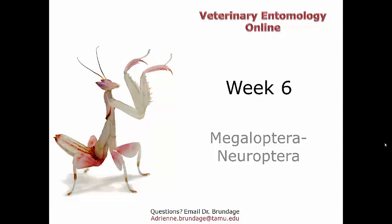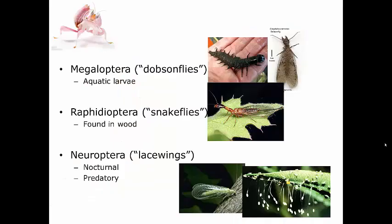Now let's move on to three more of the higher orders: Megaloptera through Neuroptera. These are orders you may or may not be familiar with. We do have quite a few here in Texas, they are all over the country, but they tend to be insects you may not notice because they're not in really large numbers or they're not obvious and in your face.